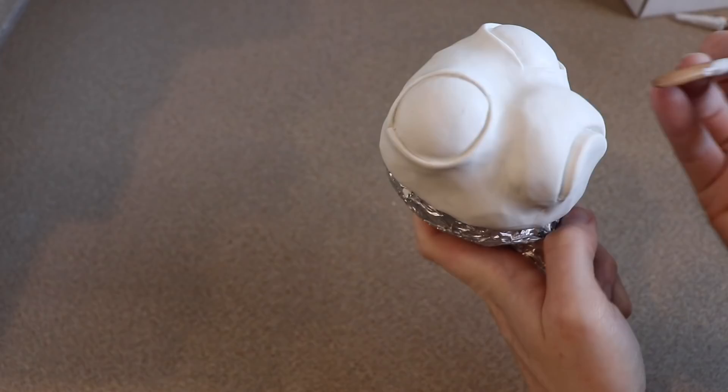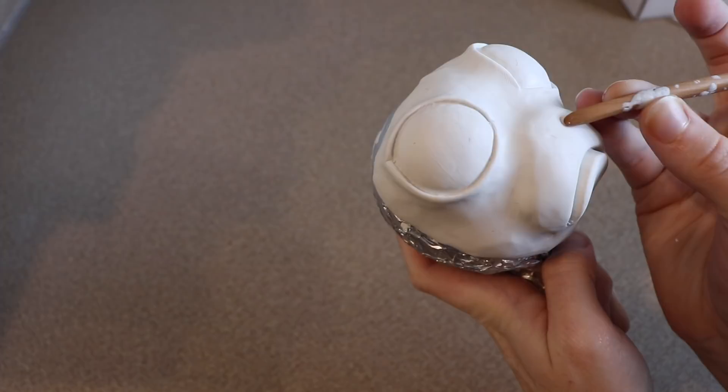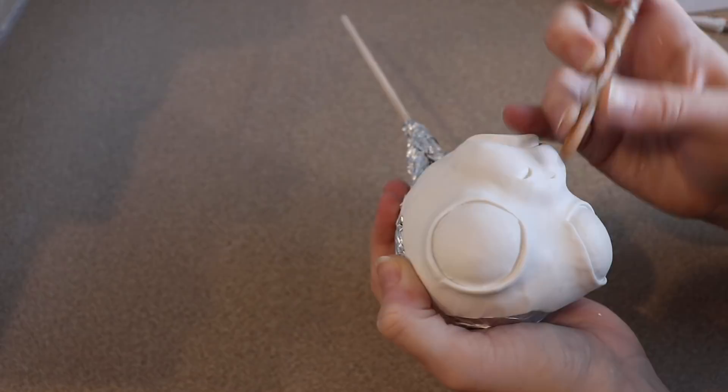So after I'm happy with the shape of our face, I'm going to pull it off of the foam ball, and I'm going to bake this in the oven at 275 Fahrenheit for probably about 45 minutes. And while our clay face is baking in the oven, we can work on the wire frame and the clay legs.